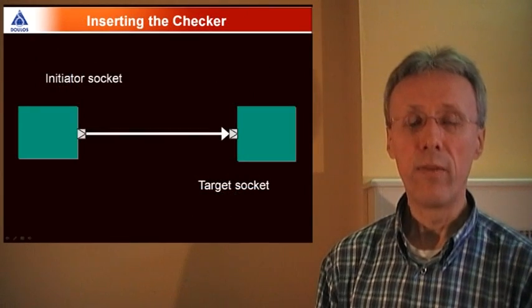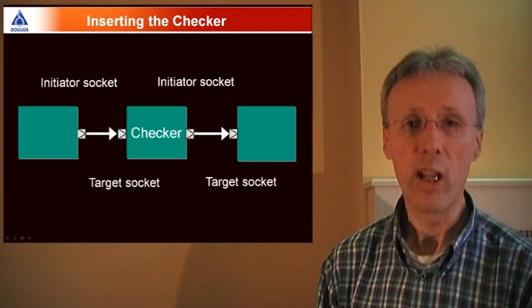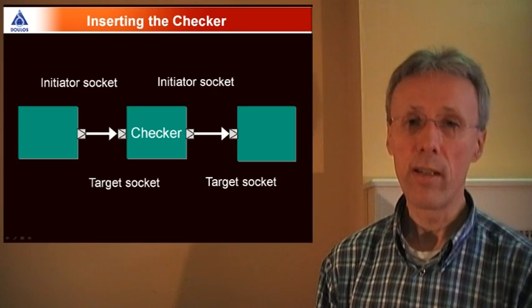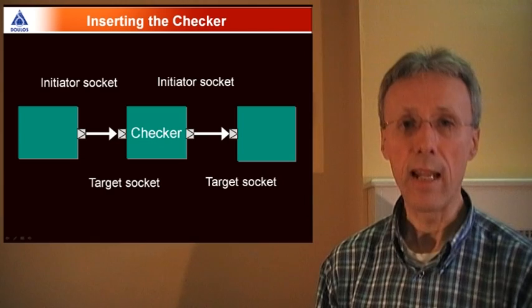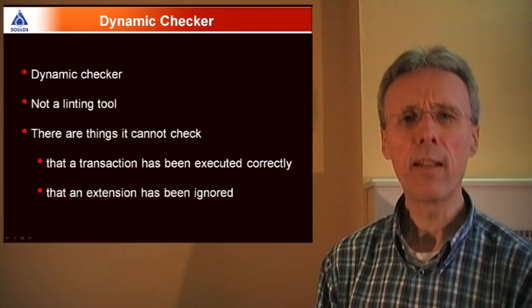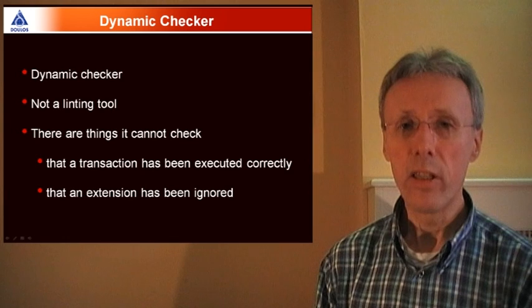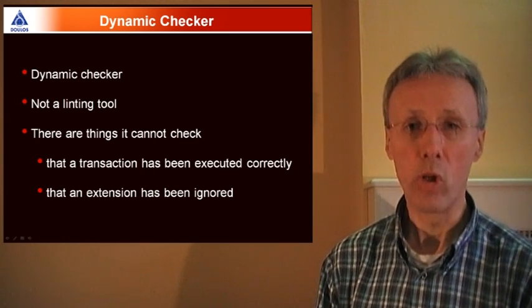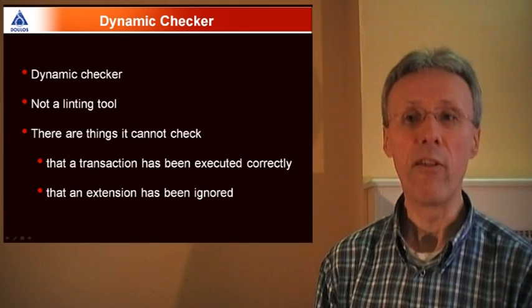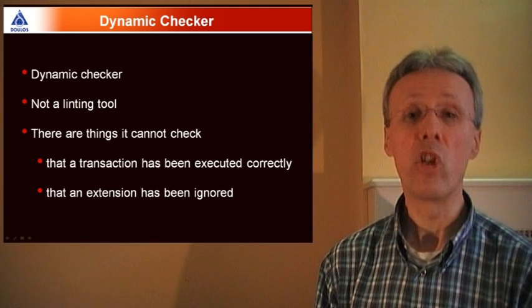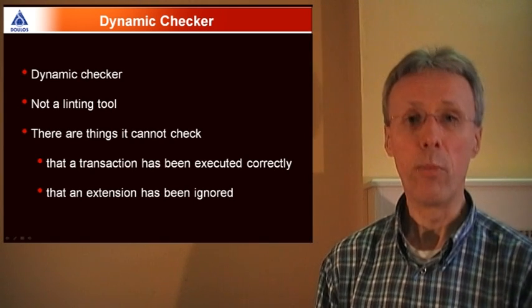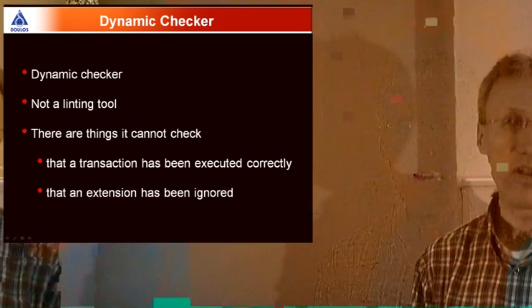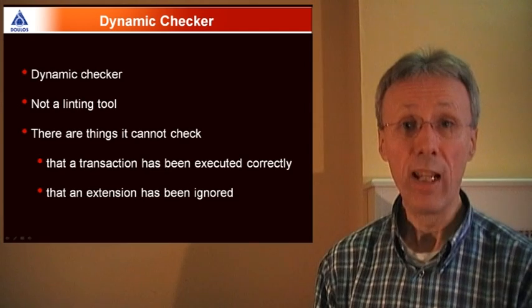The checker itself gets instantiated in line between an initiator socket and a target socket. The checker is an extra SystemC component that you instantiate as a simulation model. This is a dynamic checker, not a linting tool. It doesn't parse and analyze your source code. It's a simulation model that runs as part of the simulation and may report errors. There are some obvious things it can't check. For example, the protocol checker cannot check that a transaction has been executed correctly, and it can't check that an extension that's supposed to be ignorable has indeed been ignored.